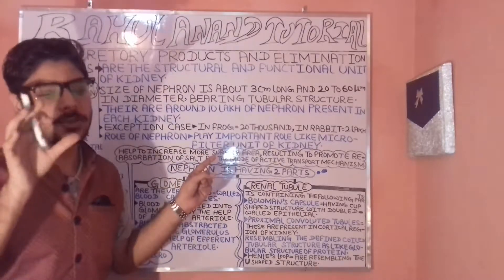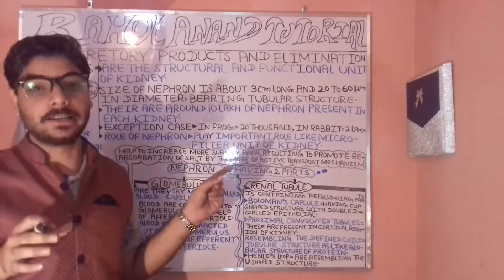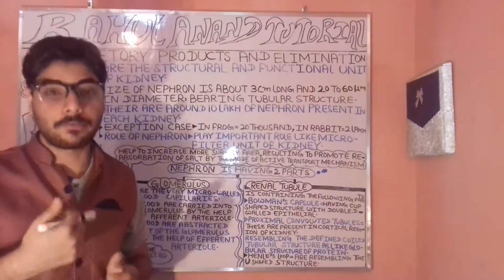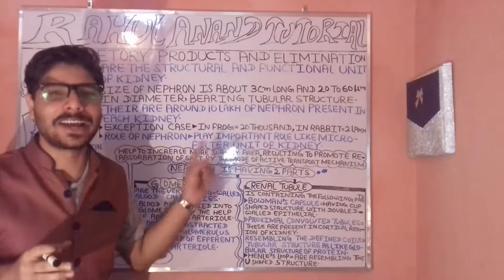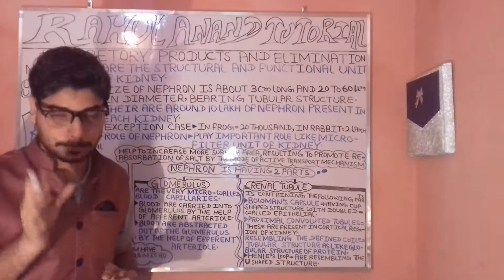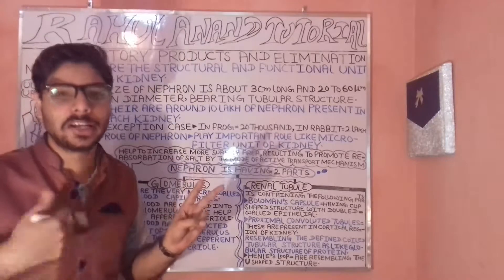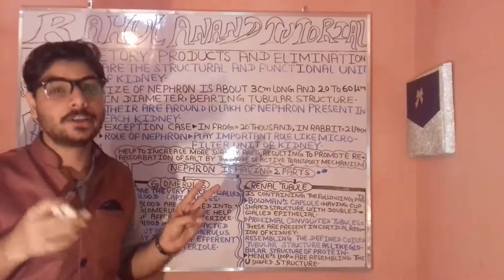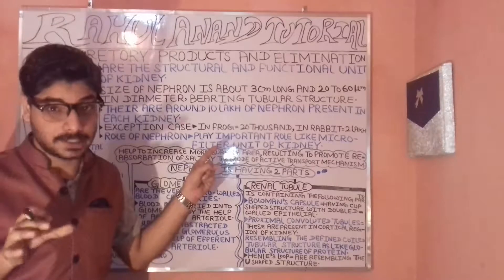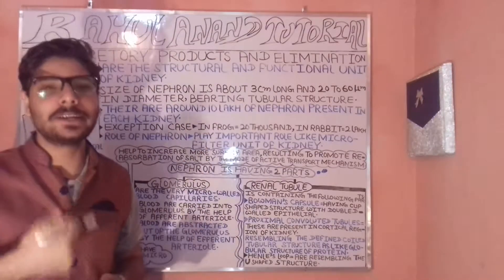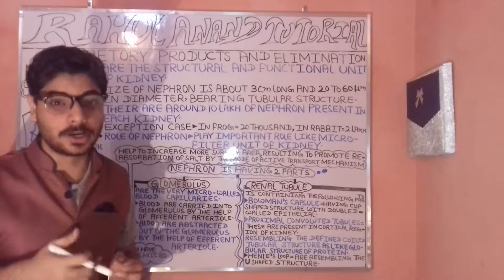Nephrons are around 3 centimeters long. In terms of diameter, they measure around 20 to 60 micrometers. The nephron resembles a tubular structure.